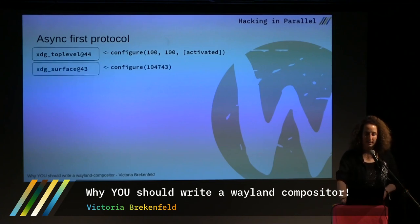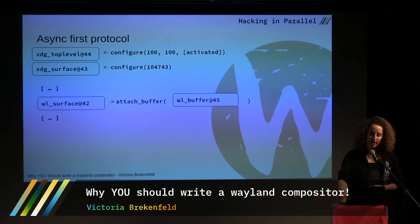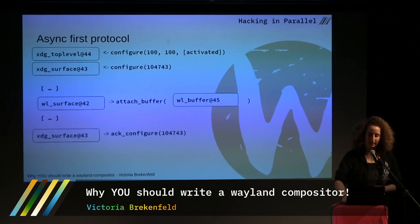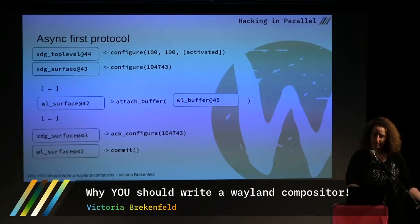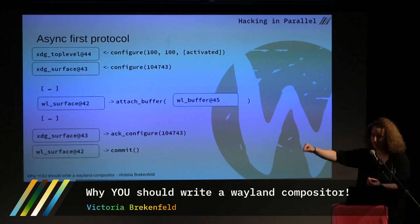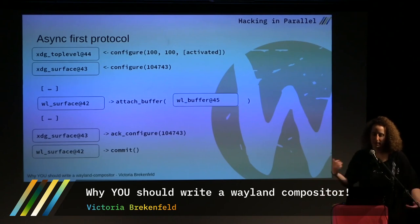Then you attach a buffer to your surface, tell the compositor which configure request you're acknowledging with an ACK call, and send it off. All of this is completely asynchronous. If you get another configure request while this is happening, the compositor still knows what state you're in because the ACK call specifies which configure you're answering. This prevents weird race conditions with resizing. The second this buffer is attached with the right size, the Wayland compositor can display it — every frame should be perfect under Wayland.